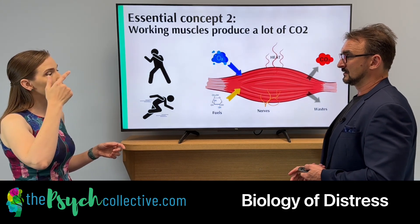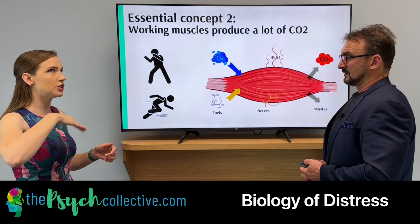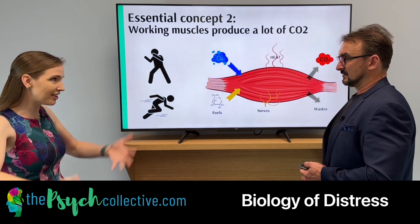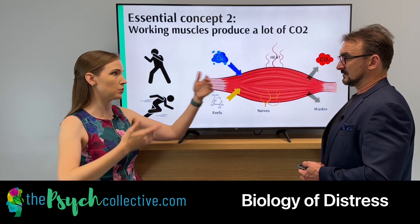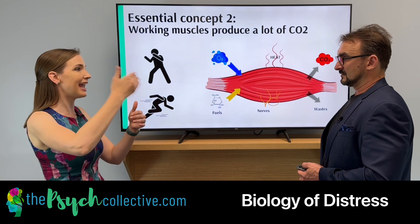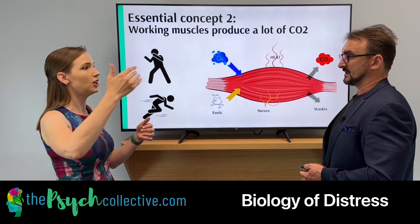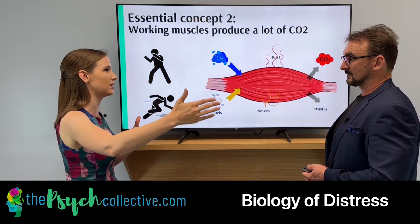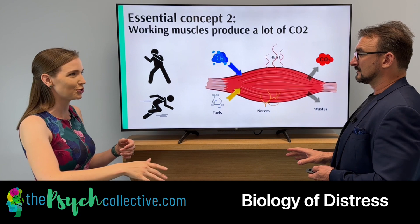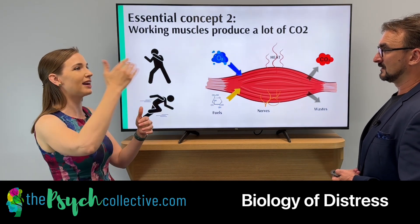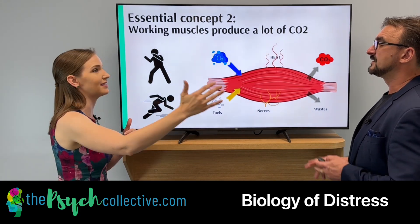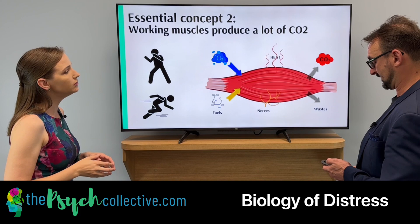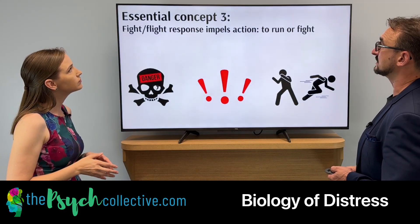The huffing and puffing is to get oxygen in, but critically it's also to get carbon dioxide out — because you've got extra CO2 being produced by the muscles. That's why there's an extra need to exhale. You've got to get the muscle CO2 out as well as the surplus CO2 from breathing.